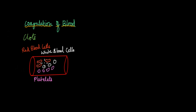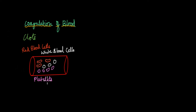Now, say that this is a blood vessel. You have different components in blood like red blood cells, white blood cells, and also platelets. Platelets are not actually cells — they're smaller pieces of larger cells that were formed during the process of platelet formation.